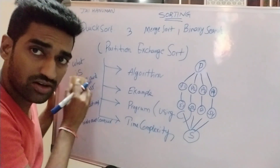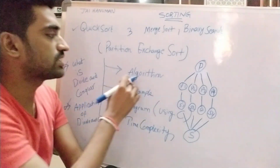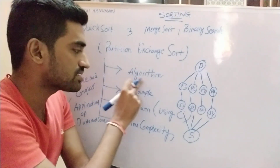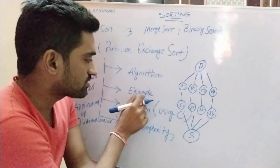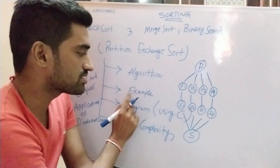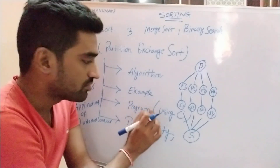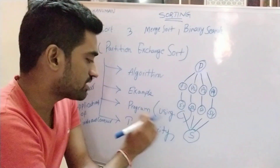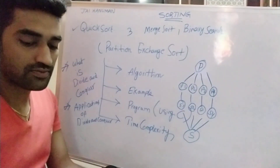Now I will discuss the algorithm for quicksort. After writing the algorithm, I will solve and trace one example problem, arranging all elements in ascending order. Based on this algorithm I will also write a program in C language, and then we will analyze the time complexities for quicksort.